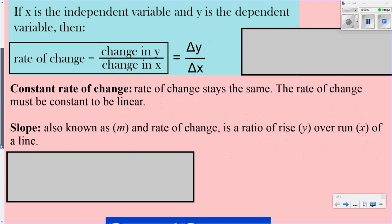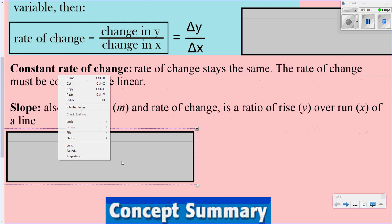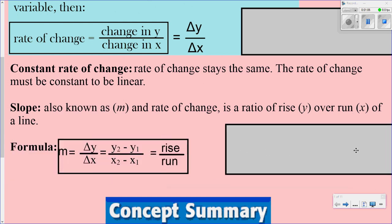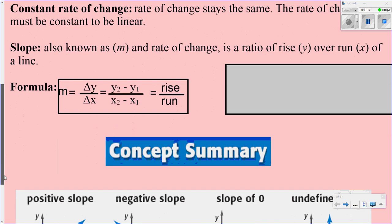Rate of change can also be known as slope, and also m. When it's on a graph, it's your rise over run. So slope, m, rate of change, and rise over run are all the same thing. Using the formula, you have m equals delta y over delta x, which is also equal to y2 minus y1 over x2 minus x1, and is also equal to rise over run.